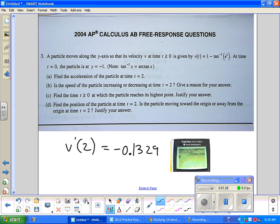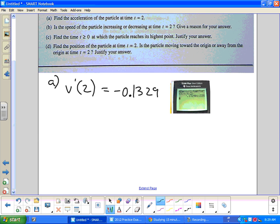You just get a point for the number for letter A. That's it. That is the answer to letter A. Letter B: Is the speed of the particle increasing or decreasing at time equals two? Give a reason for your answer.